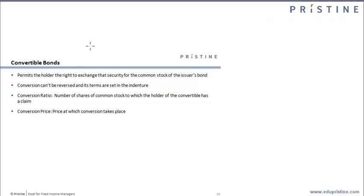Next, let's talk about convertible bonds. Just like sinking fund provisions, callable, and puttable bonds, convertible bonds are a type of bond. Convertible bonds are bonds which permit the holder of the bond — the lender who has the bond — the right to exchange the security for the common stock of the issuer.